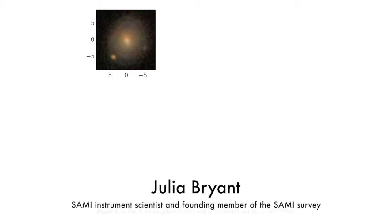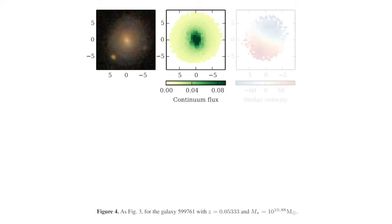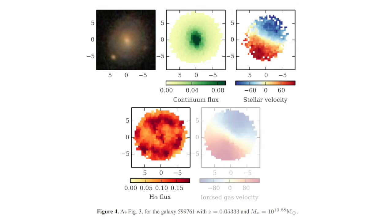So for each SAMI galaxy, we have an image that comes from the selection survey that was used to choose that galaxy. For example, an SDSS image. Then the SAMI instrument itself produces from the 3D cube a continuum flux image, which is measuring the intensity of the stars in the galaxy. A stellar velocity image, in which the red regions are rotating away from us and the blue regions are rotating towards us. So that shows the motion of the stars. Then the H-alpha gas image. The H-alpha gas traces where gas is in the galaxy because that gas is ionised by stars and re-emits in the H-alpha emission line. Then by measuring the shift of that line from where it normally should be, we can measure the velocity of that gas.